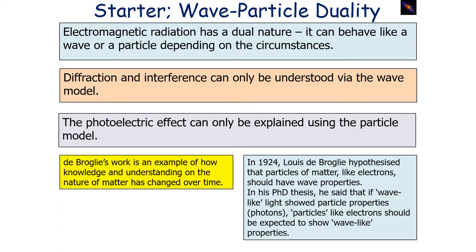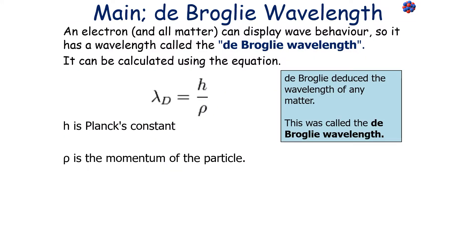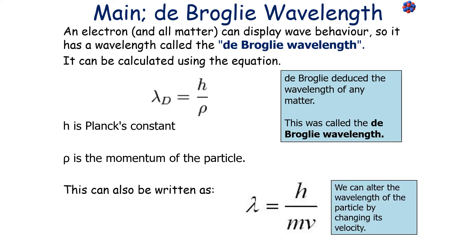This theory of wave-particle duality has been accepted to be true, at least until any new conflicting evidence comes along. De Broglie's work is an example of how knowledge and understanding on the nature of matter has changed over time. An electron and all matter can display wave behavior, shown with a wavelength called the de Broglie wavelength. De Broglie deduced the wavelength of any matter as: de Broglie wavelength = Planck's constant h over momentum p, or equivalently λ = h over mv.